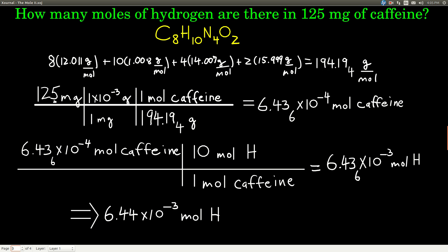Now we know the molar mass. We can go from milligrams to grams using our prefixes — milli means times 10 to the minus three — and then convert to moles of caffeine using the molar mass. Crossing out units, they cancel, giving us moles of caffeine. Then using the conversion factor from the formula — 10 moles of hydrogen per one mole of caffeine — moles of caffeine cancel, and we get 6.44 times 10 to the minus three moles of hydrogen in 125 milligrams of caffeine.